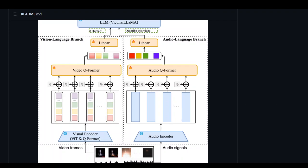The training of VideoLLaMA is done separately for each branch. In the first stage, large-scale video caption datasets such as WebVid-2M along with image caption datasets such as CC 595K are used for training the model with video-to-text generation. In the second stage, the model is fine-tuned with image instruction-following data from sources such as LLaVA, MiniGPT-4, and Video-Chat.